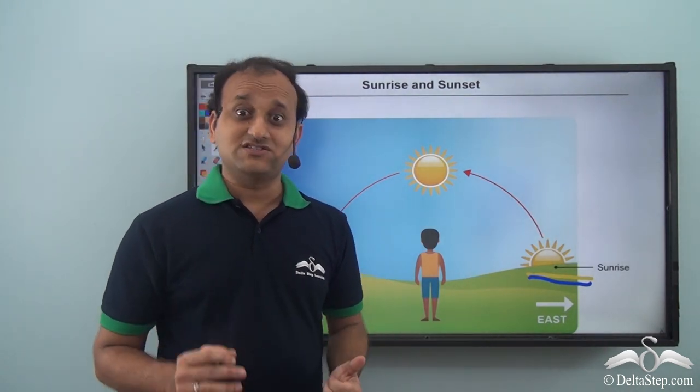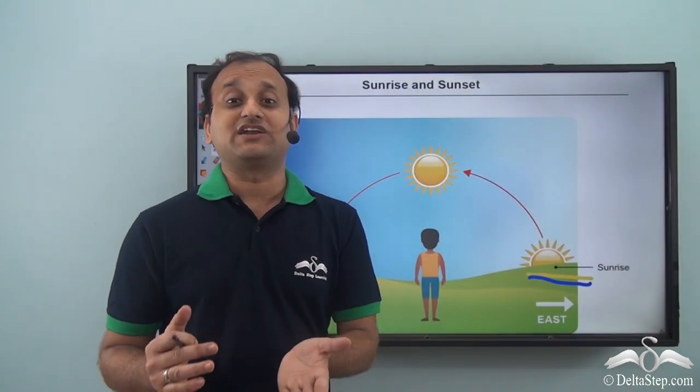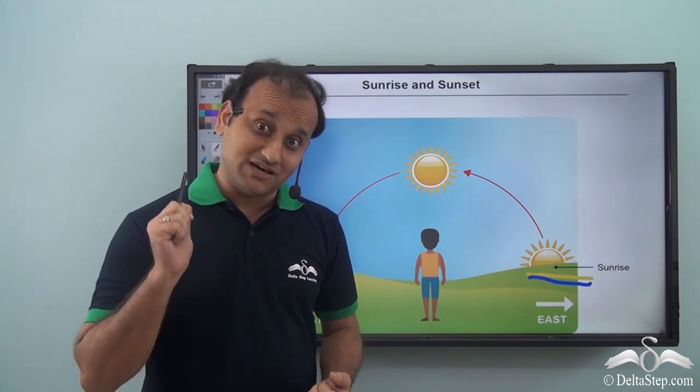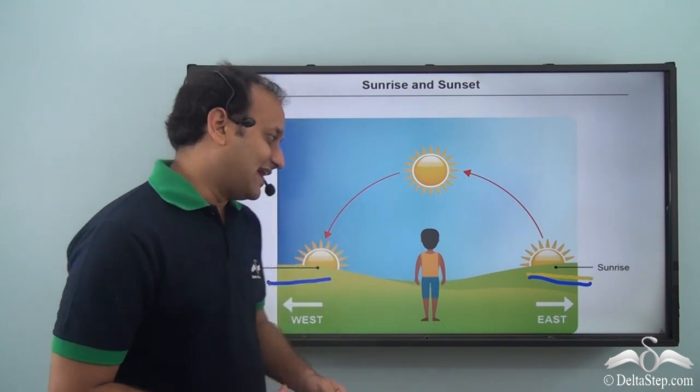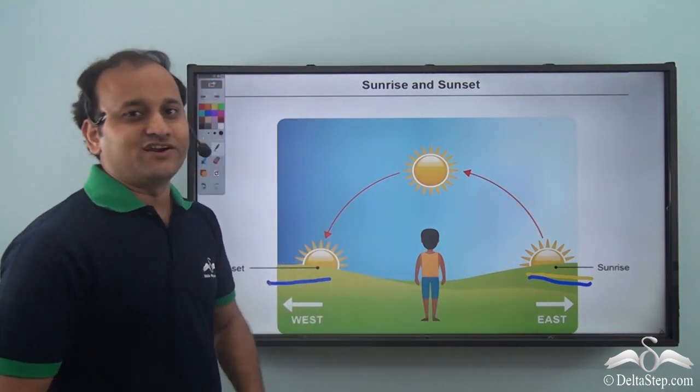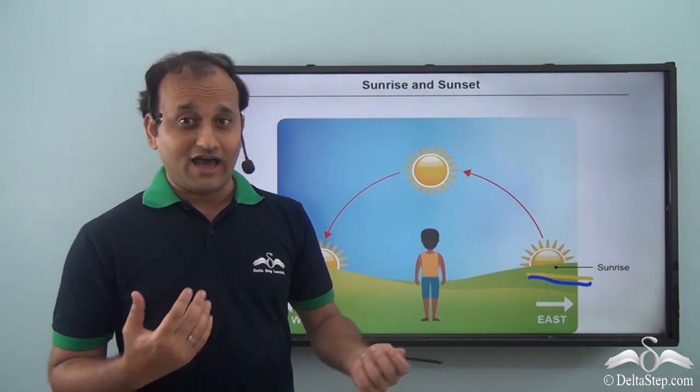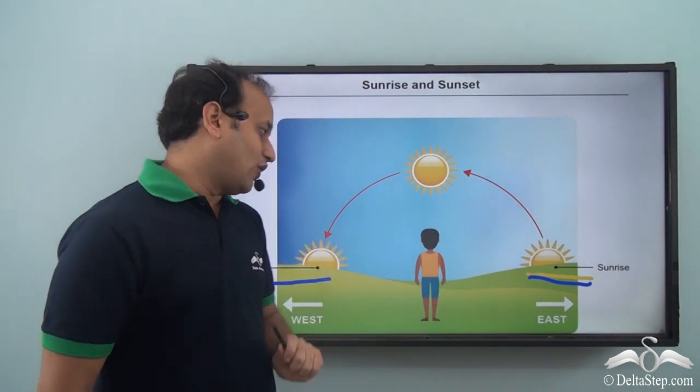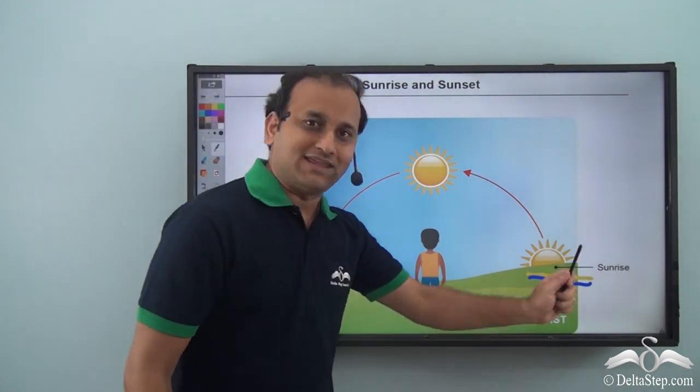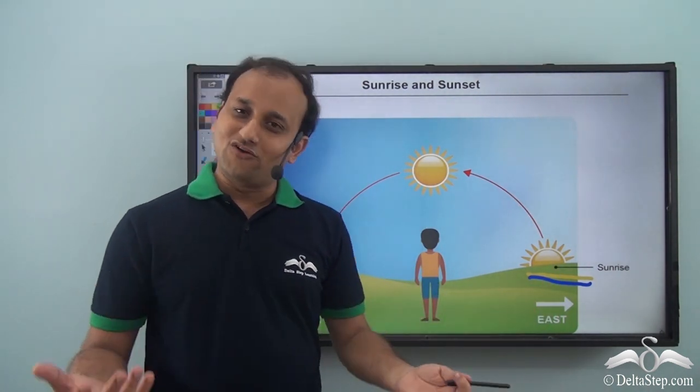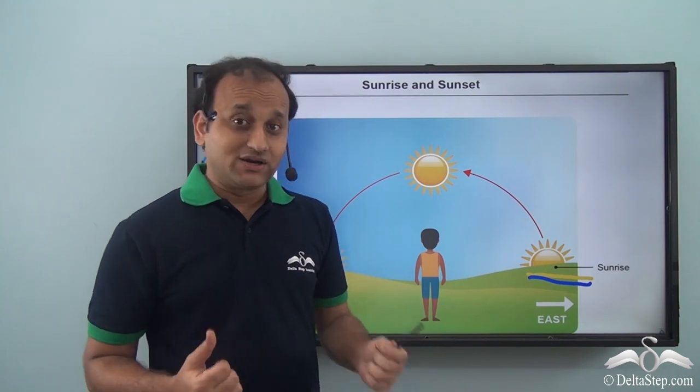So east and west are directions which are fixed, irrespective of which side you are facing. The Sun will always rise from the same position all the time. And that is why these are called cardinal directions. So that is about the Sun. If you have the Sun in view, you can always identify the west direction and the east direction, and with the help of east and west you can always identify the north and south.